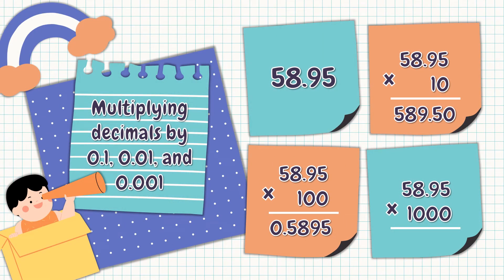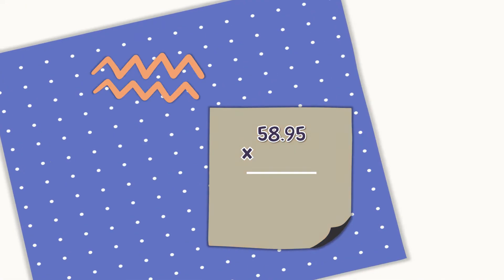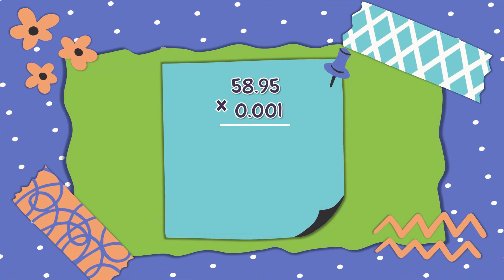Now we are done multiplying 58 and 95 hundredths by one-hundredth and the answer is 0.5895 ten-thousandths. This time, let us multiply it by one-thousandth. Let's go! Again, write the numbers in column and start multiplying from right going to the left. 58 and 95 hundredths times 1, the answer is 5,895.